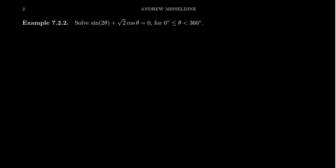Let's try to solve the equation sine of 2 theta plus the square root of 2 times cosine of theta equals 0, and let's solve it on the domain where theta ranges from 0 degrees to 360 degrees. This indicator at the end tells us we want to solve this equation in terms of degrees.